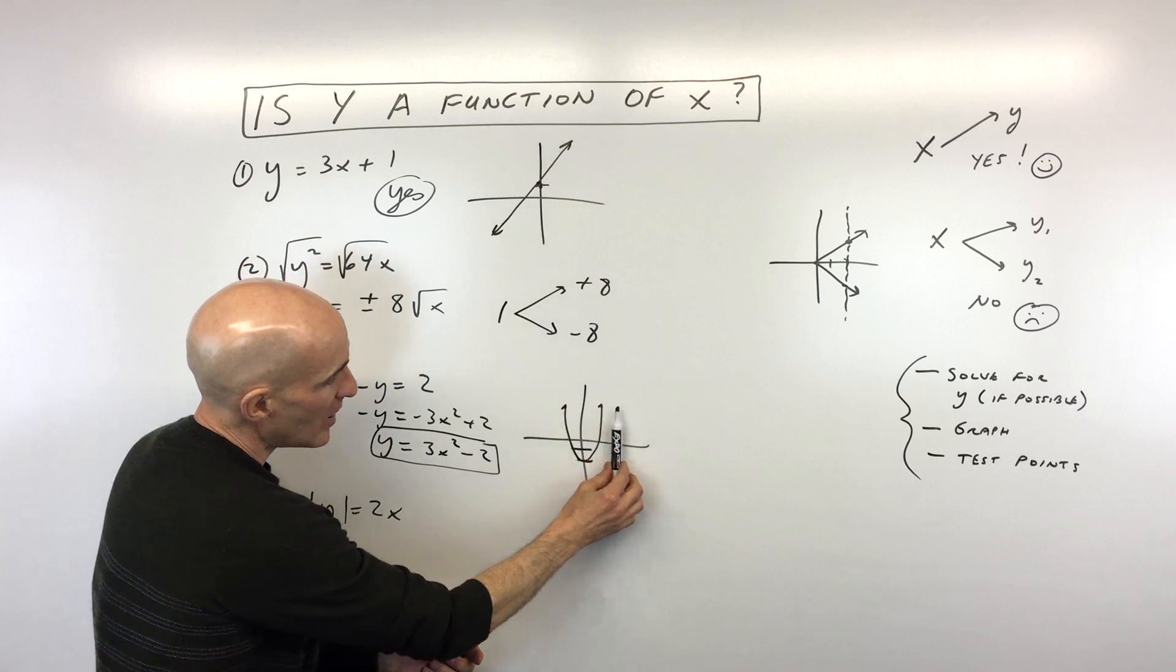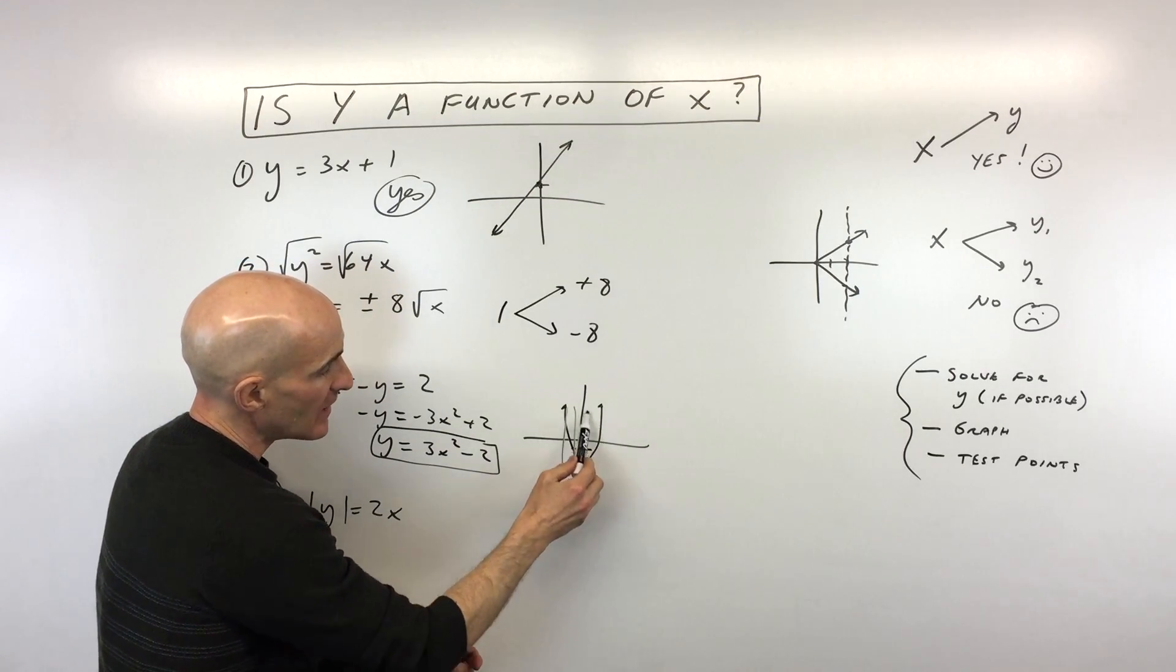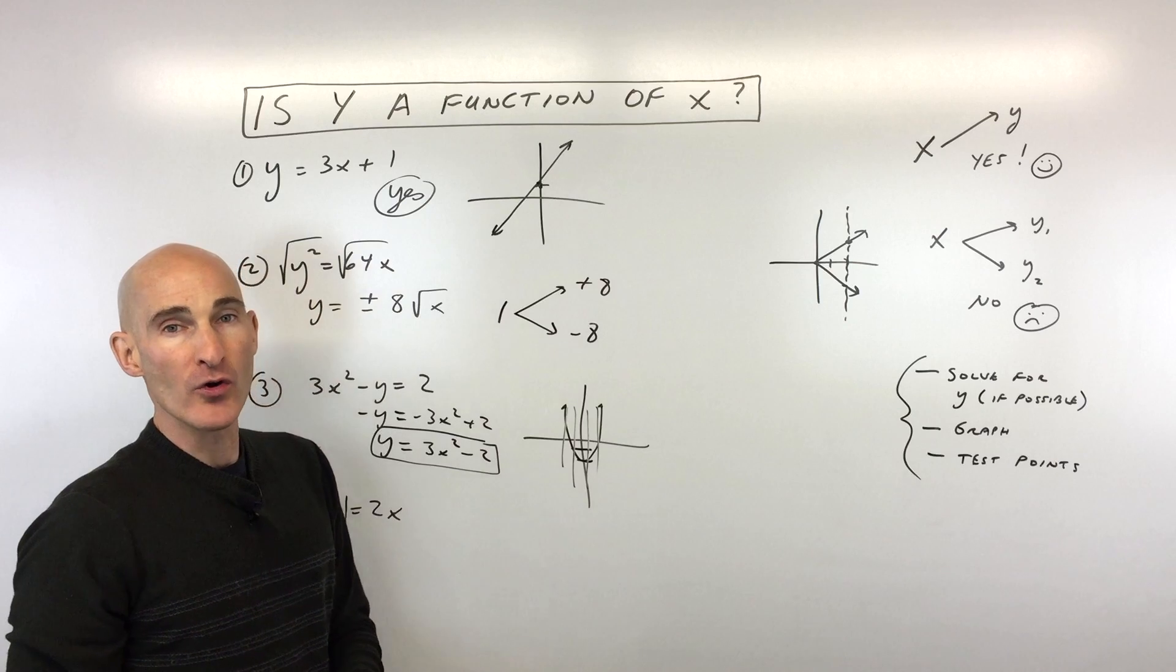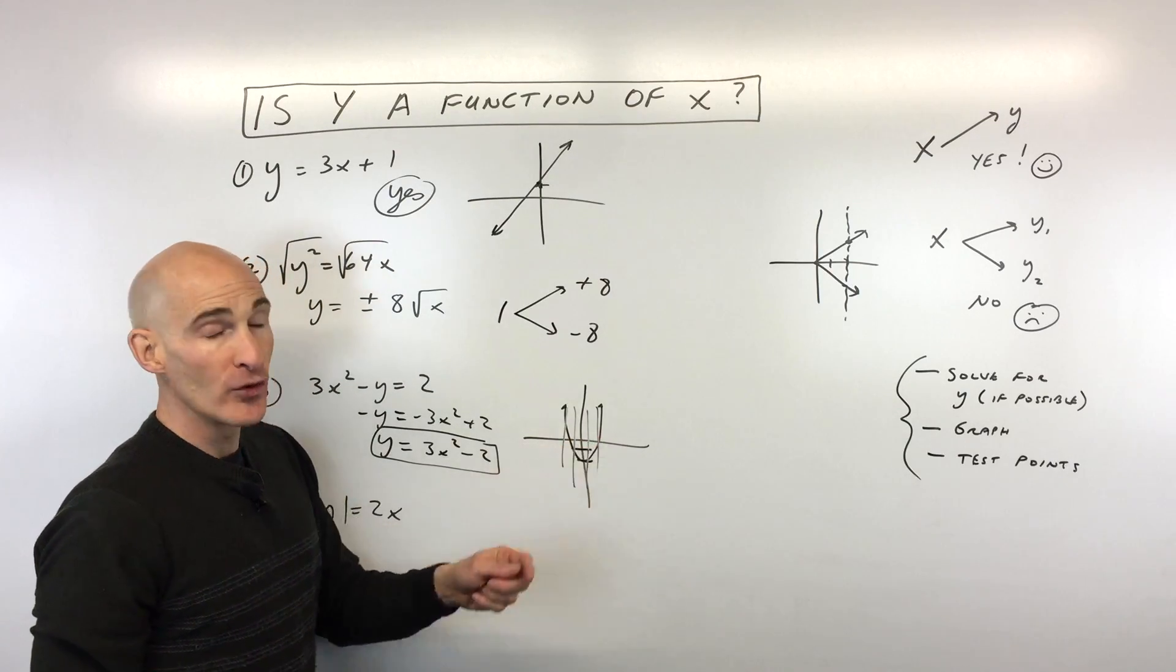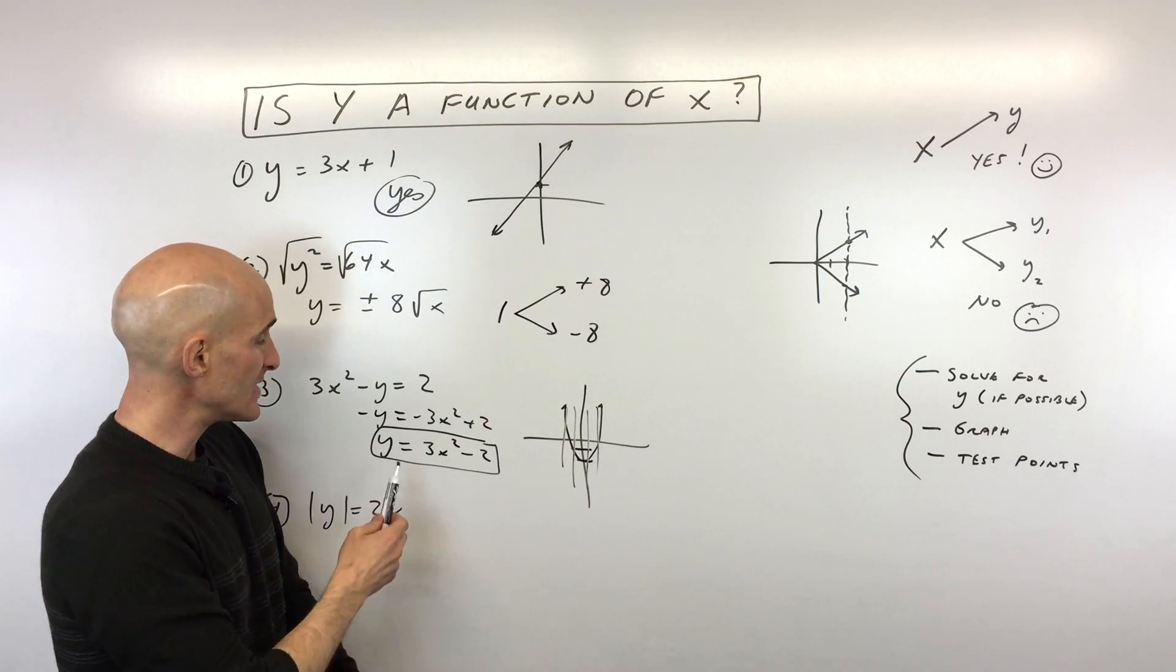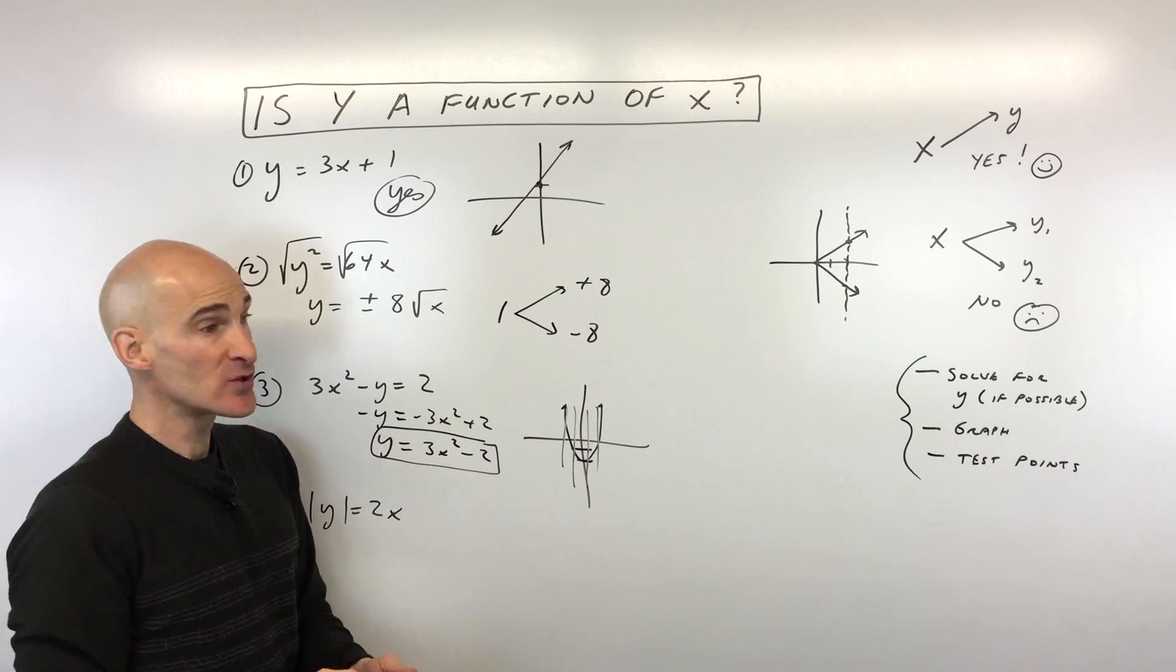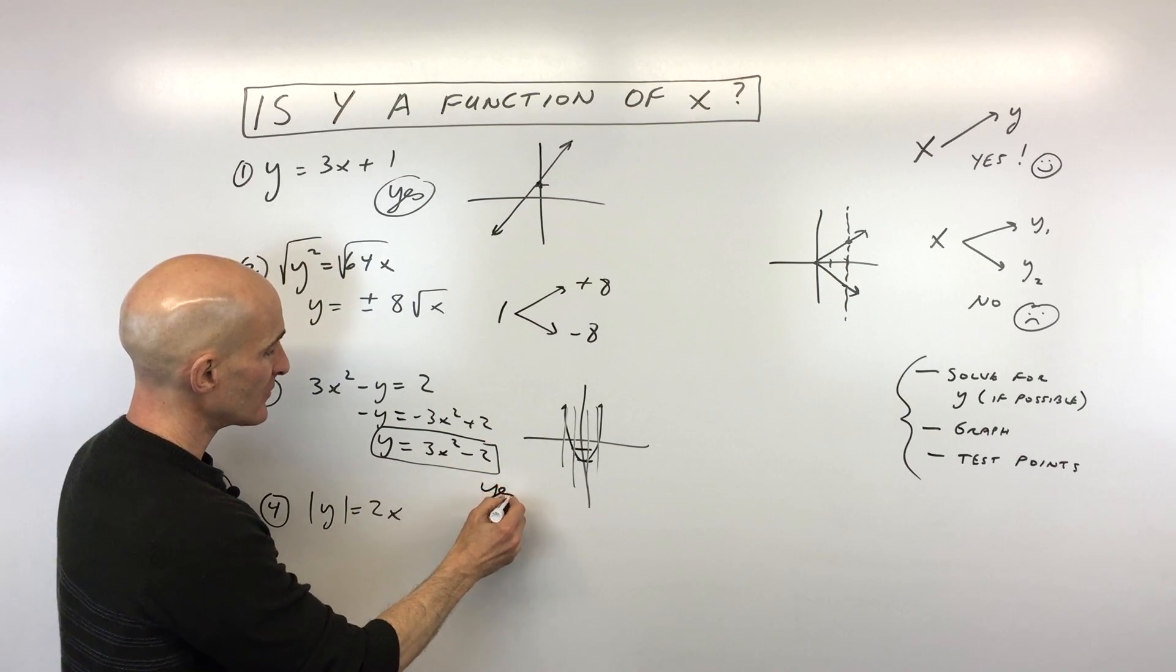But when we do that vertical line test, you can see that as we go across the graph, is it crossing at more than one point? No. So that means for every x value, there's only one y value. So that means that y is a function of x. And so this one is a function. So we're going to write yes for this one.